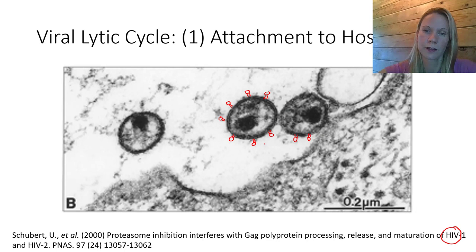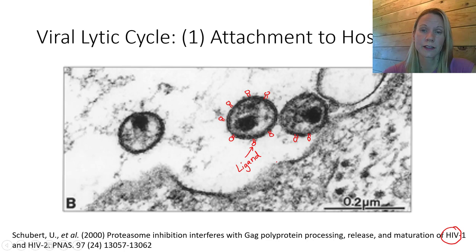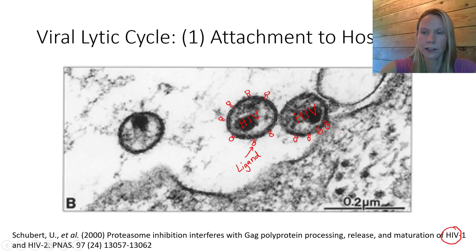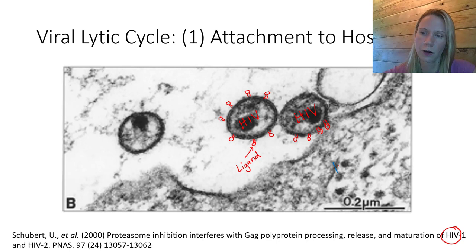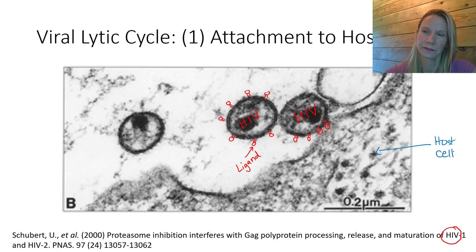So these are a whole bunch of HIV viruses, and here's one that is attached. Let's look at the host receptor in blue — this would be the host cell in this picture. Do you know what the host cell is for HIV? Here's a hint: it's a CD4-positive cell. That's right, it's a helper T cell. So HIV infects helper T cells because helper T cells have the correct receptor that binds specifically with the viral ligand.